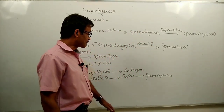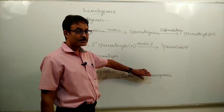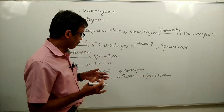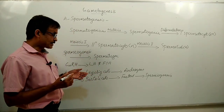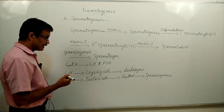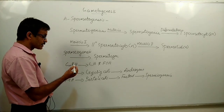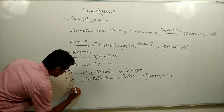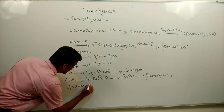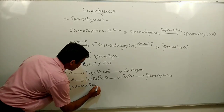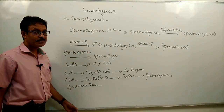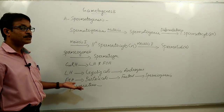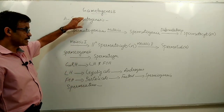After the formation of sperms, they are collected and transported through the accessory ducts and finally released out. This release of sperm from the testis to the outside is called spermiation. So spermiation is the release of sperm from the testis to the outside.